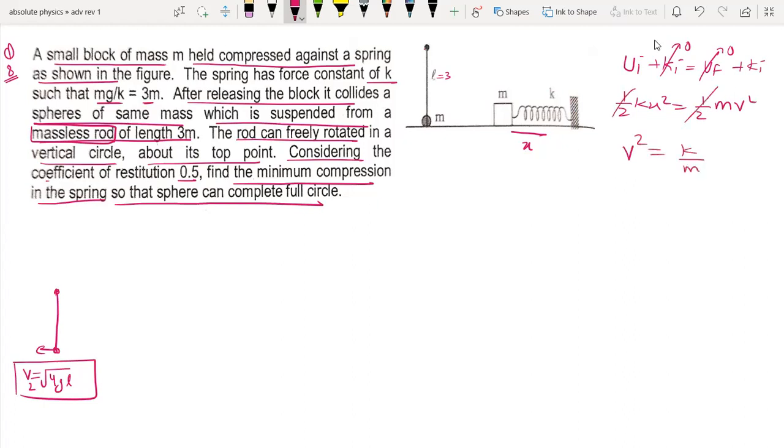K by M into x squared. We have here mg by K value is 3, so K by M, that means V squared equal to 10 by 3. This is equal to 10 by 3 x squared.